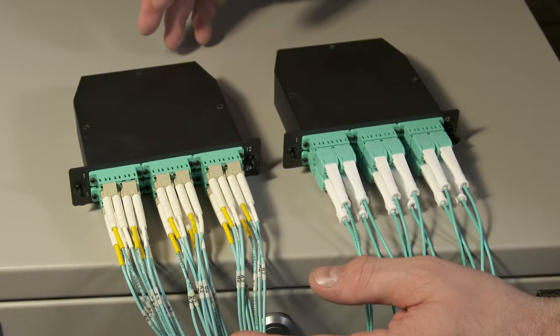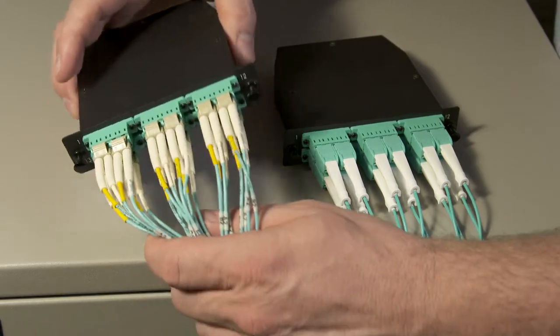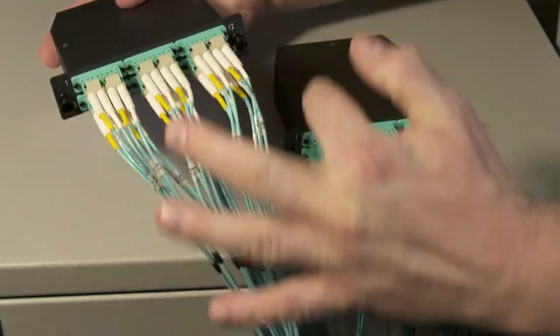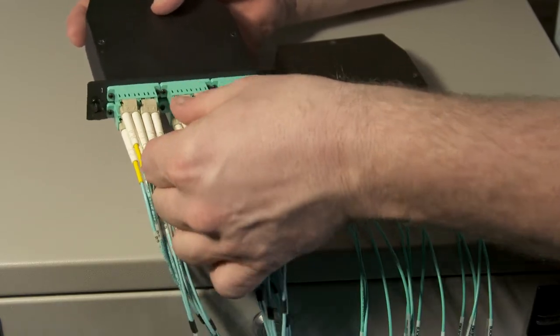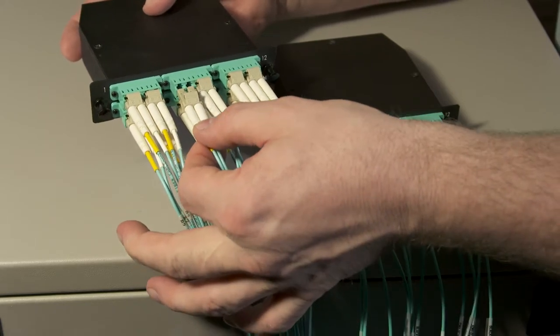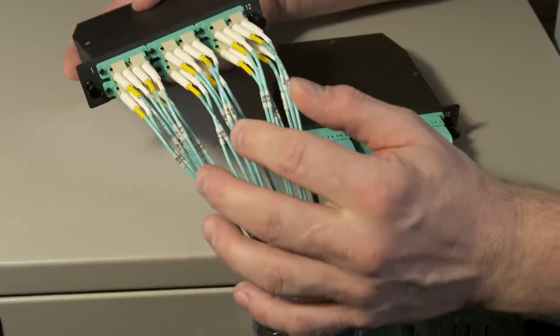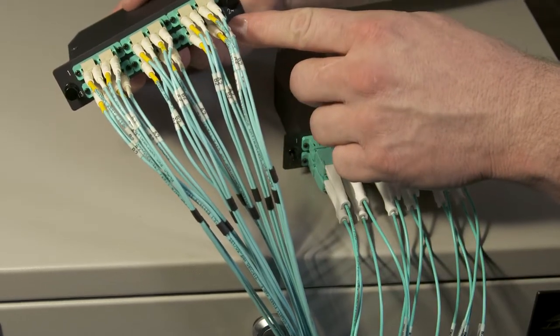In high density applications, it can be very difficult to remove fiber cable assemblies. Looking at the cassette here on the left, there's 12 fiber assemblies. Sometimes it's very difficult to remove an LC assembly from the cassette or in a high density application. This is especially difficult if you're working with or have to remove a fiber assembly from the lower row.